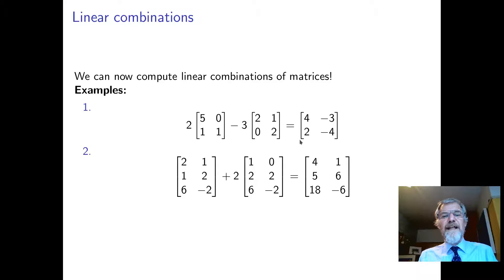We can take what are called linear combinations, in other words a scalar multiple plus another scalar multiple. In this case, you can think of it as multiplied by minus three. So something times this matrix plus something times this matrix. They have to be the same shape, and the answer is the same shape.